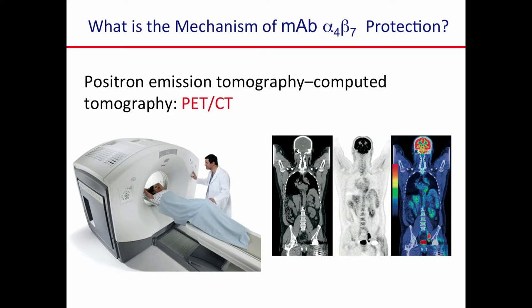What we've done more recently — and this is unpublished data — is we've turned to a technique called positron emission tomography / computed tomography, or PET-CT. This is something routinely used in medicine. We wanted to apply this and look at the virus in SIV-infected macaques. The probes that we used were radio-labeled probes against the GP120 protein of SIV — a monoclonal antibody against the V2 loop of SIV. We also image for CD4-positive cells with an anti-CD4 antibody.